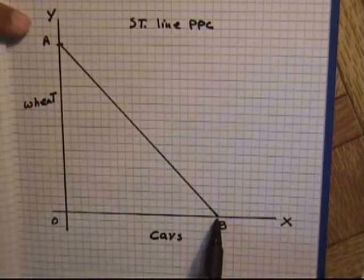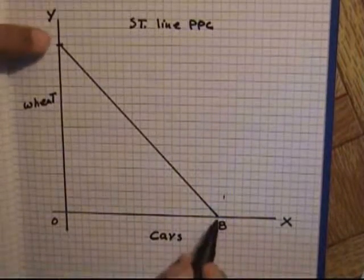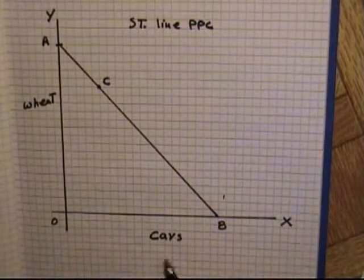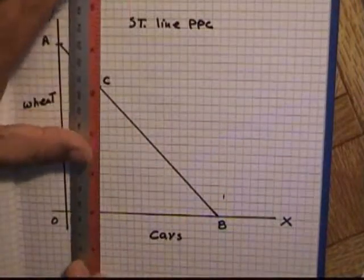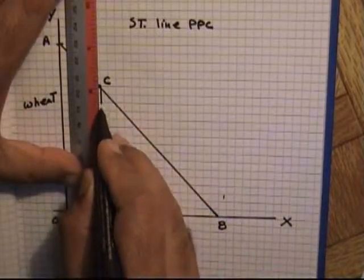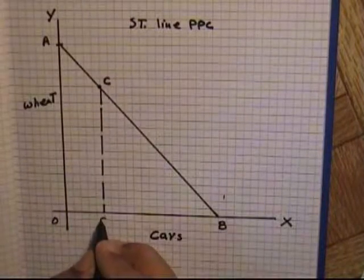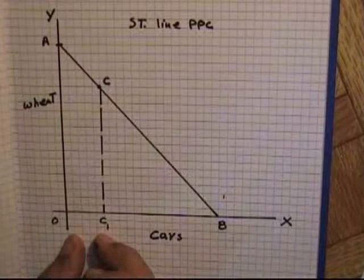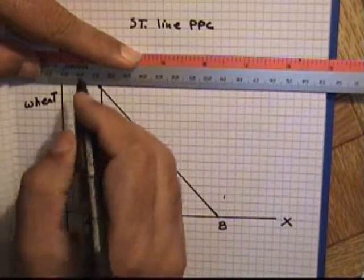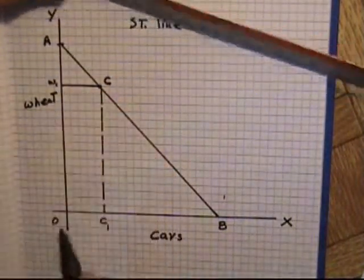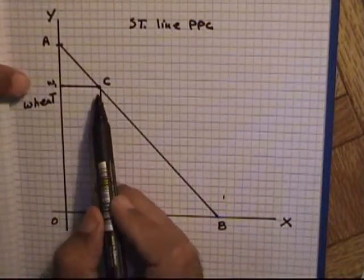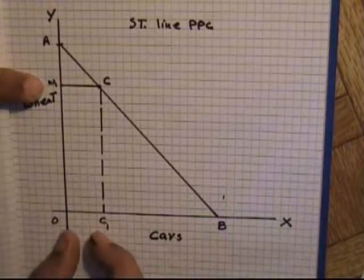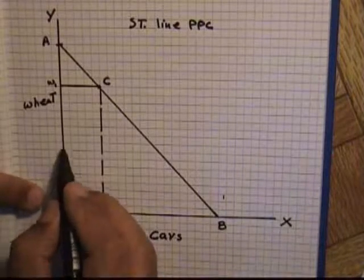There are a number of points between A and B which give us different production possibilities. For example, at point C, the production level of cars is OC1 and the production of wheat is OW1. If the country decides to produce at this level, it means the country produces more wheat (OW1) and fewer cars (OC1), because that distance is less than the other.